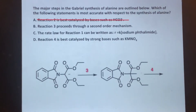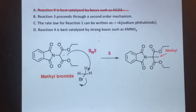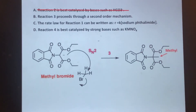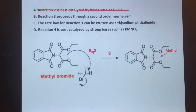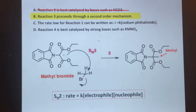Choice B states that reaction three proceeds through a second-order mechanism. Reaction three shows a carbanion having a methyl group added to it. This works via an SN2 reaction: the negatively charged carbanion is a strong nucleophile that attacks methyl bromide — bromine being a great leaving group. There's no steric hindrance, so backside attack occurs, adding the methyl group that alanine has as its side chain. The rate law for SN2 is rate = k[nucleophile][electrophile], confirming second-order kinetics. Choice B appears correct.